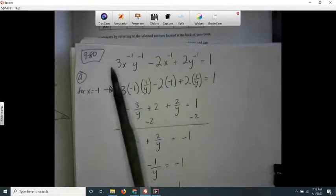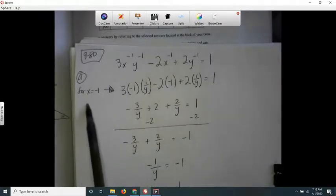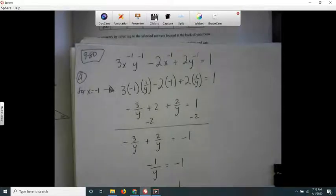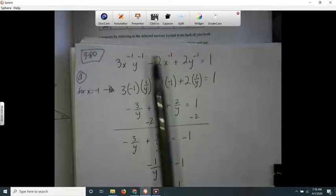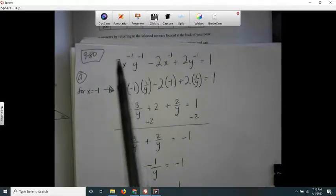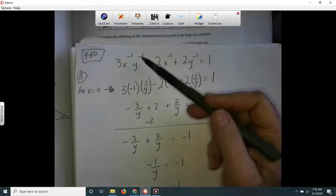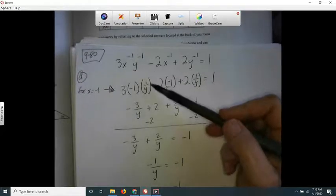So for letter A, they want me to say what y is when x is negative 1. So I just rewrote the whole thing with negative 1s. I also rewrote every time I had y to the negative 1, I wrote 1 over y.